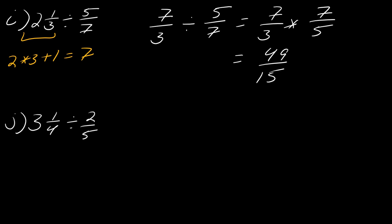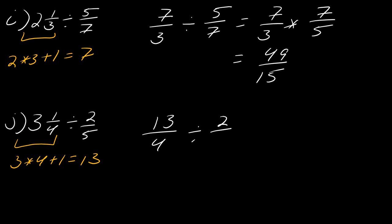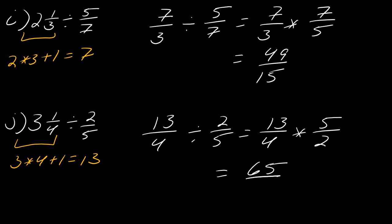For the next one: three times four plus one equals 13. So I can rewrite this as 13 over four divided by two fifths, which I rewrite as 13 over four times five over two. Thirteen times five equals 65, and four times two equals eight — giving 65 over eight.